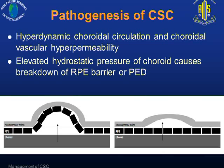The pathogenesis of CSC is basically due to a hyperdynamic choroidal circulation and choroidal vasculature hyperpermeability, resulting in a thickened choroid. This causes elevated hydrostatic pressure of the choroid, leading to breakdown of the RPE barrier or pigment epithelial detachment. You can see a pigment epithelial detachment or a very minute break in the RPE tight junctions, which can lead to serous retinal detachment.